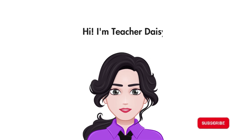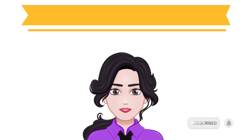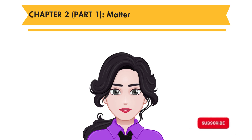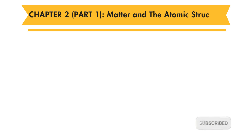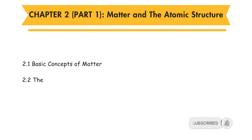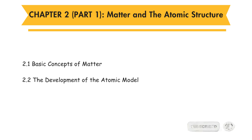Hi, I am Teacher Daisy. Now, let's learn Form 4 Chemistry Chapter 2, Part 1: Matter and the Atomic Structure. In this part, you will learn 2.1 Basic Concepts of Matter and 2.2 The Development of the Atomic Model.